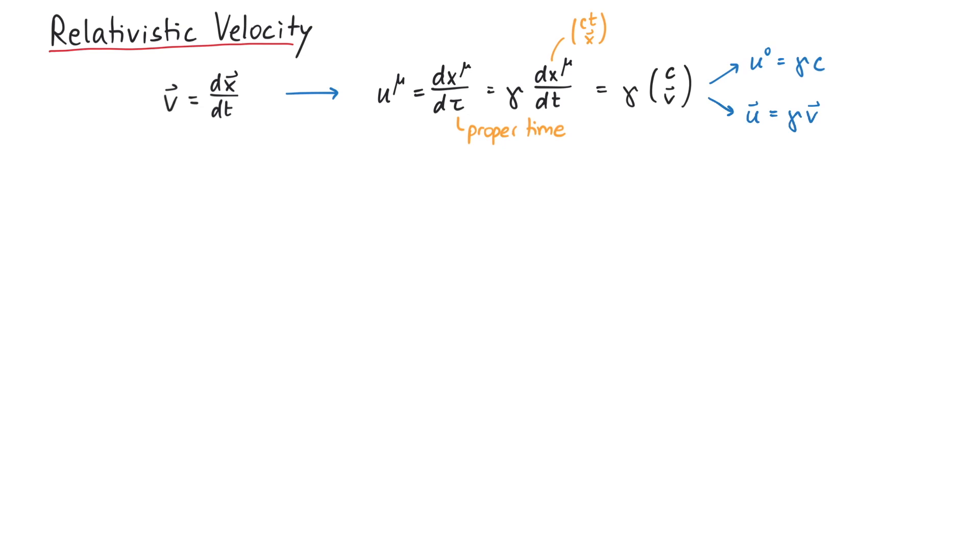That's why we use a different symbol to denote velocity in special relativity. It would be a bit confusing to have an equation v equals gamma times v.